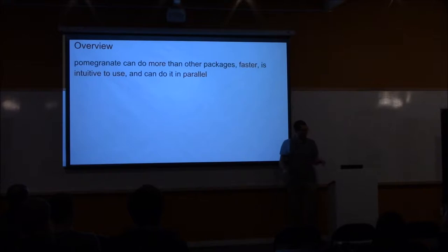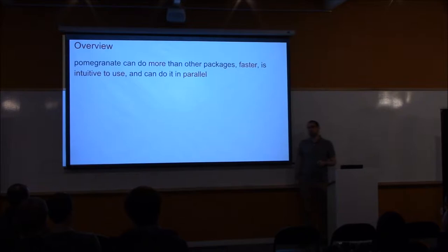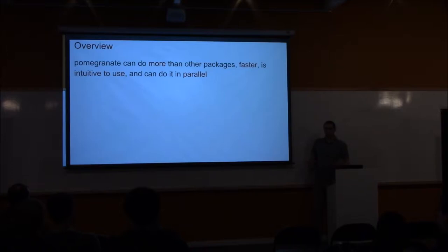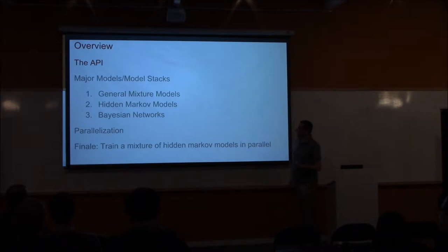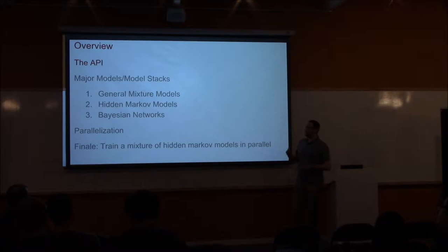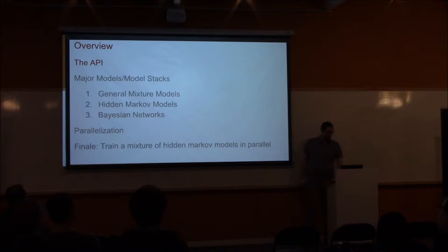If you remember only one sentence from this talk, I want it to be this: pomegranate can do more than other packages, it can do it faster, it's intuitive to use, and it can do all of these things in parallel. Hopefully by the end of this talk you'll be able to agree with that. In this talk I'm going to first talk about the API, then talk about some of my favorite models, then show you some examples of parallelization, and finally show you how you can train a mixture of hidden Markov models in parallel and how simple it is to do that.